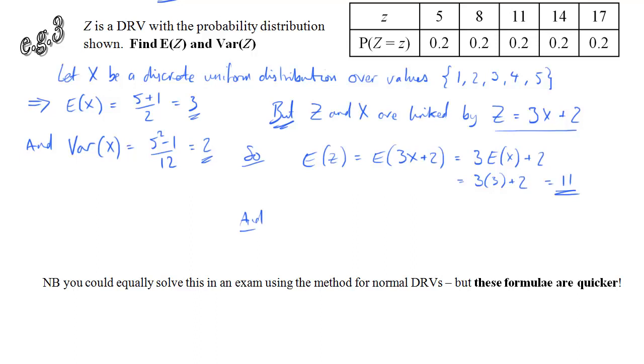And a fairly simple formula as well for the variance. The variance of z is equal to the variance of 3x plus 2. Remember, the plus 2 doesn't affect the variance. It's just the 3 that does. And we square that and put it in front. So we have 3 squared times the variance of x. So simply 9 times 2, which is 18.